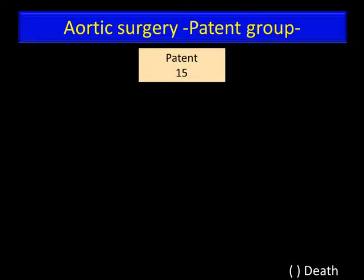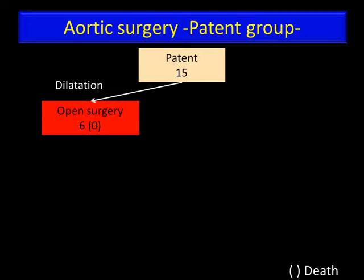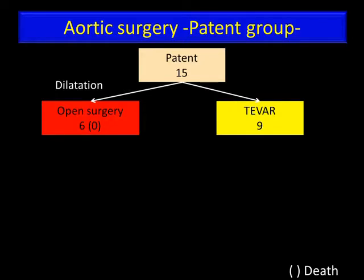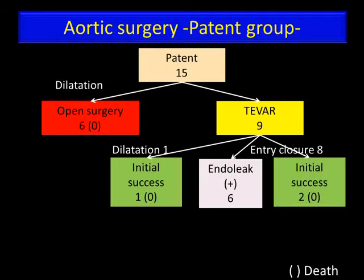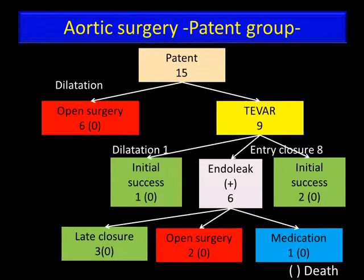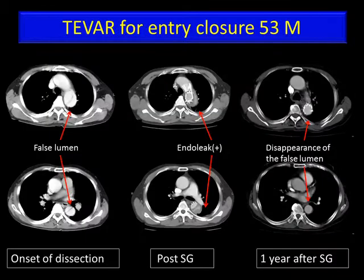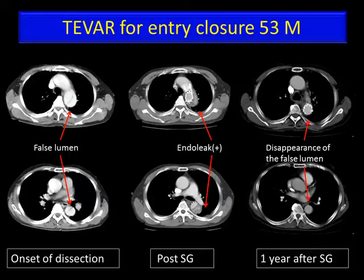This slide shows elective aortic surgery in the patent group. Of the 15 patients, six underwent thoracotomy or laparotomy for aortic dilatation, and nine underwent TEVAR. The indication for TEVAR was aortic dilatation in one and entry closure in eight. Among patients who underwent TEVAR, the false lumen was fully thrombosed immediately after surgery in two, and endoleak developed in six. The endoleak disappeared during follow-up in three patients, while two others underwent elective open surgery due to aortic dilatation. A case example: a 53-year-old man underwent TEVAR with a handmade stent graft three months after onset. Post-operative CT revealed endoleak; however, one year later there was no endoleak and the false lumen was fully thrombosed.